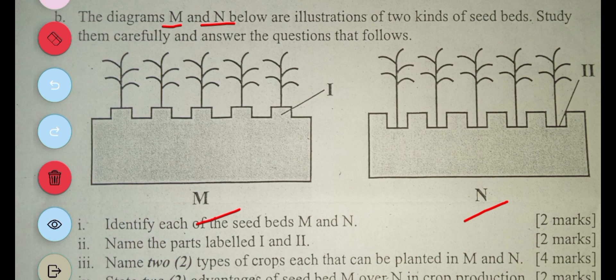Part two says: name the parts labeled I and II. So I, which is this, is the raised portion. Then II, which is this part, is the sunken portion.